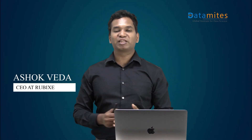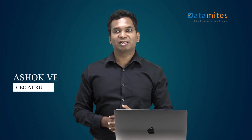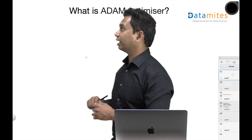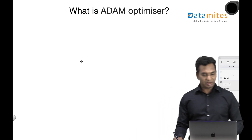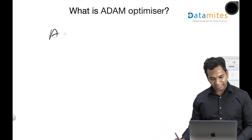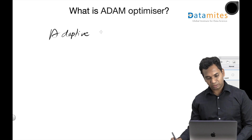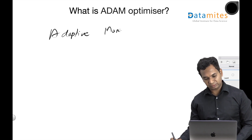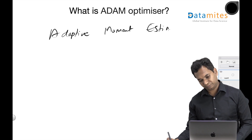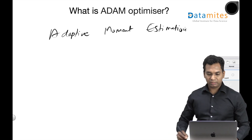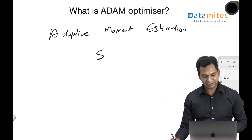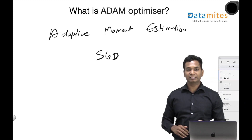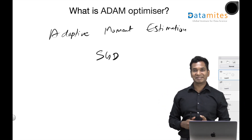Hello everyone, I'm Ashok. Welcome to another video on machine learning and data science terminologies. In this video we look at Adam optimizer, or what is Adam optimizer. Adam stands for Adaptive Moment Estimation. Adam is an extension of stochastic gradient descent.